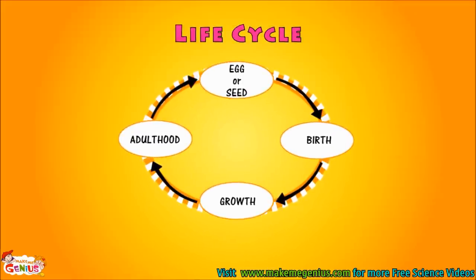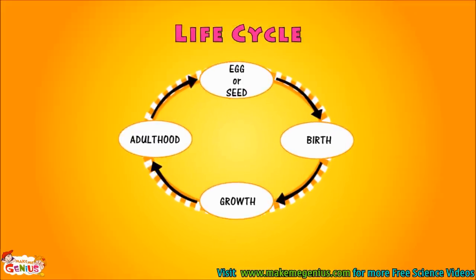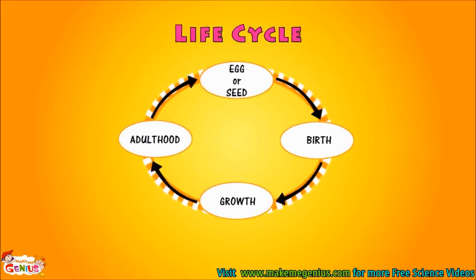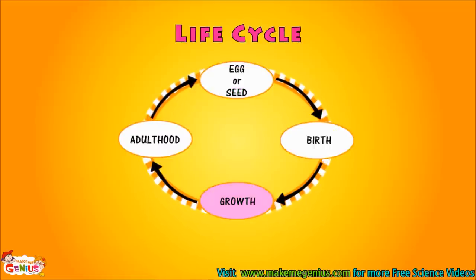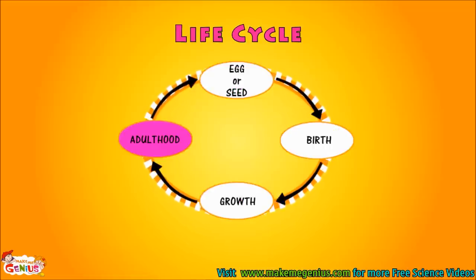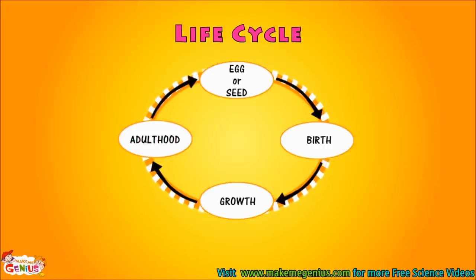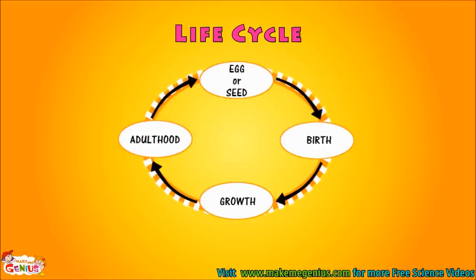Look at this picture. It shows a simple life cycle. All living species keep changing throughout life. It starts from an egg or seed. They take birth, they grow up, then they become adults, and they reproduce at this stage. When a plant or animal reaches young age, they can make babies.